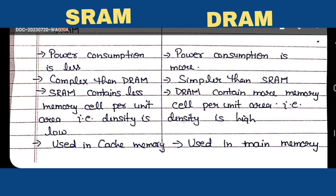Regarding complexity, SRAM is more complex because six transistors are used to store one bit. DRAM is simpler in comparison to SRAM because only one transistor and one capacitor is used per cell. As a result, SRAM contains less memory for the same area.